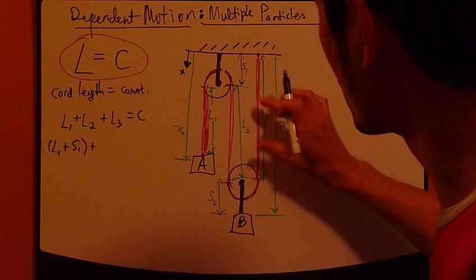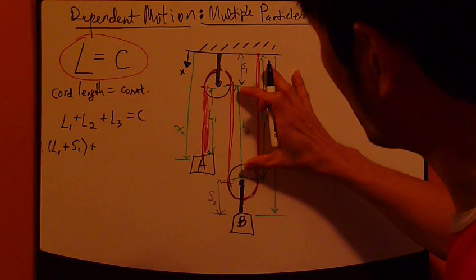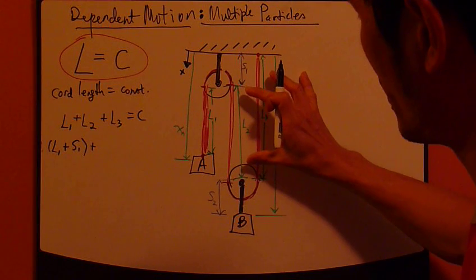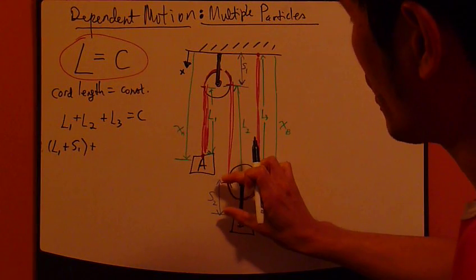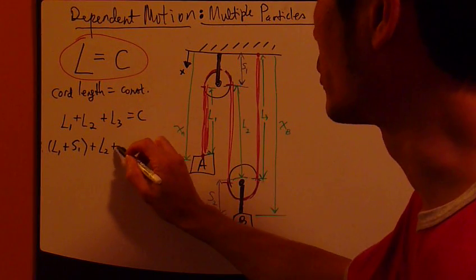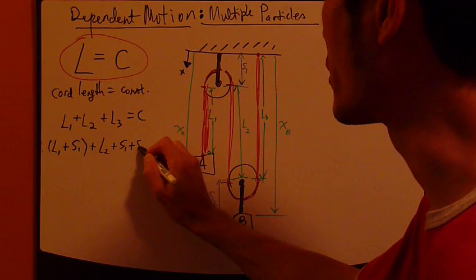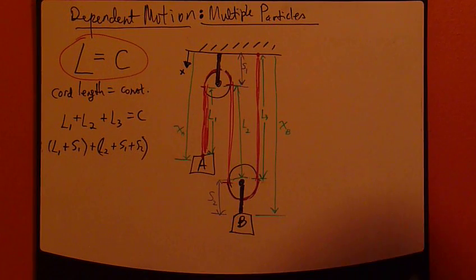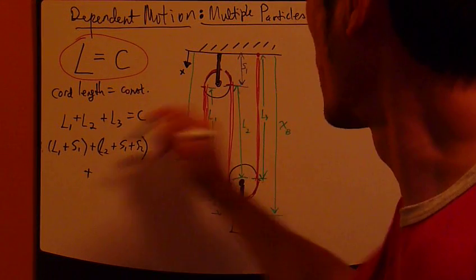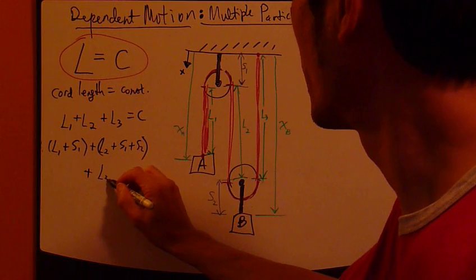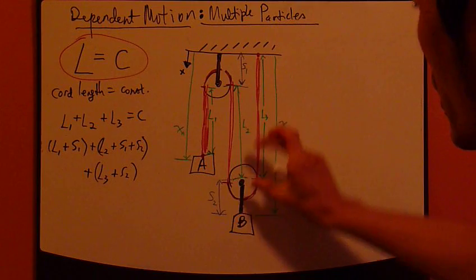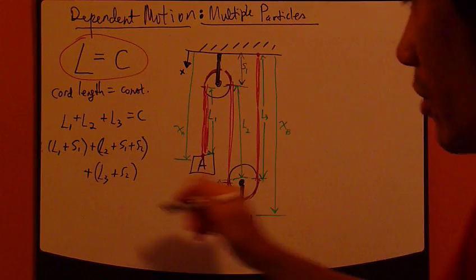Plus, L2 is this stretch. But if I add S1 to L2, if I add S2 to L2 as well, what do I get? L2 plus S1 plus S2, I get XB, right? The third one, L3, again, if I add S2 to L3, I get XB also.